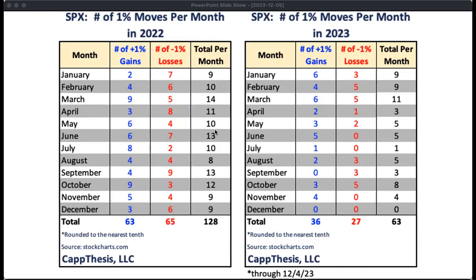Looking at this table, we can see that so far we've had 63 1% moves this year, which is just about half of what we had all of last year. There were some instances where we got more than usual, especially at the beginning of the year, but it's really dropped off on an overall basis. It's not surprising to see about 30 fewer 1% gains. Think about that — in 2022, the S&P ended up down about 19%. So we have 30 fewer 1% gains and the S&P is up about 19% right now. That's basically a 40% swing in performance with a lot fewer 1% advances, so we know we don't need these to occur.